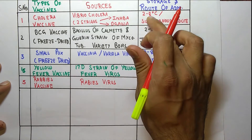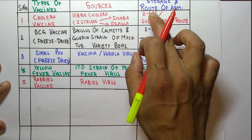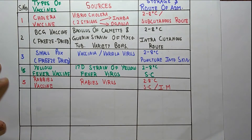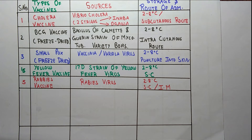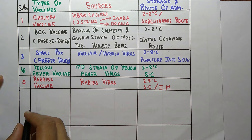Students, one thing that is common across all these vaccines is the storage temperature of 2 to 8 degrees Celsius. Now coming to the next one, which is the typhoid vaccine.